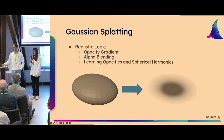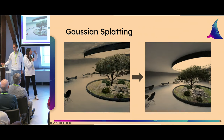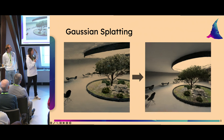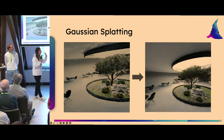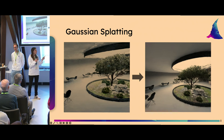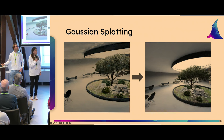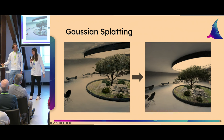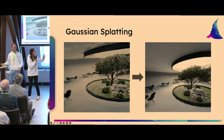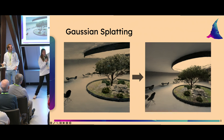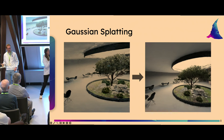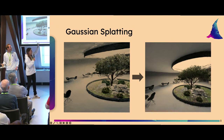Here you can see the comparison between Gaussians using no opacity gradients or spherical harmonics versus the scene using actual alpha blending and spherical harmonics. The scene using spherical harmonics and alpha blending looks a lot smoother and more realistic than the one without.